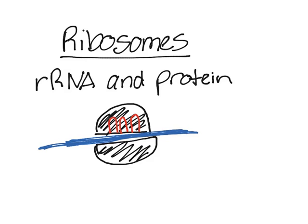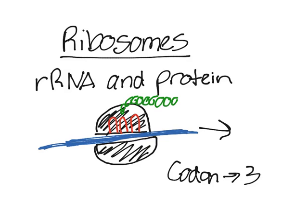Imagine there is a string of mRNA right in the middle. When the mRNA passes through the hamburger bun, it goes through in a direction like that. The ribosomes assemble a protein, and it makes a chain of amino acids. It makes a chain of amino acids corresponding to the code on the mRNA. It begins with the start — there is a section on the mRNA called the start codon, and a codon is essentially a group of three nucleotides.